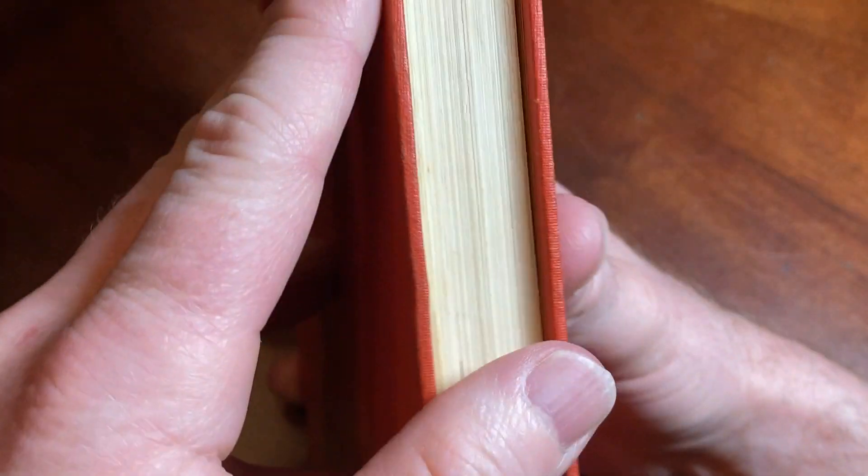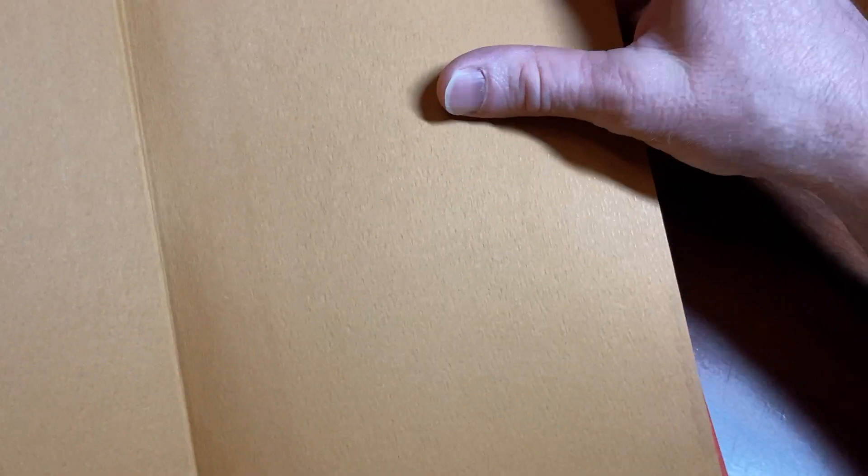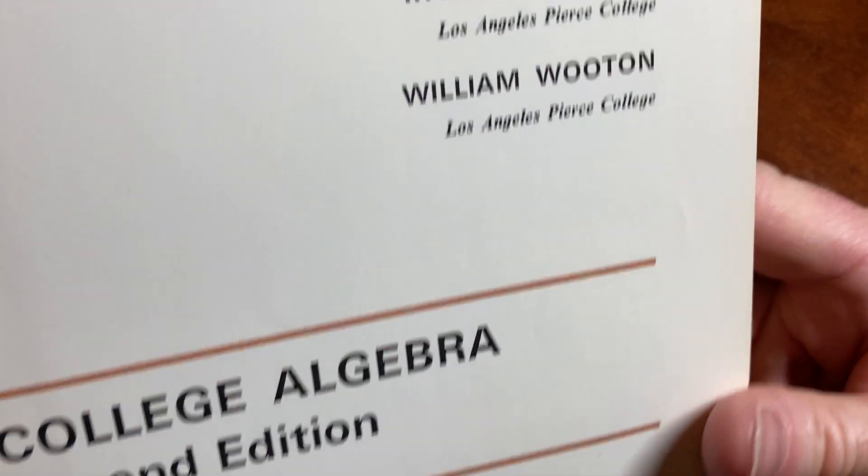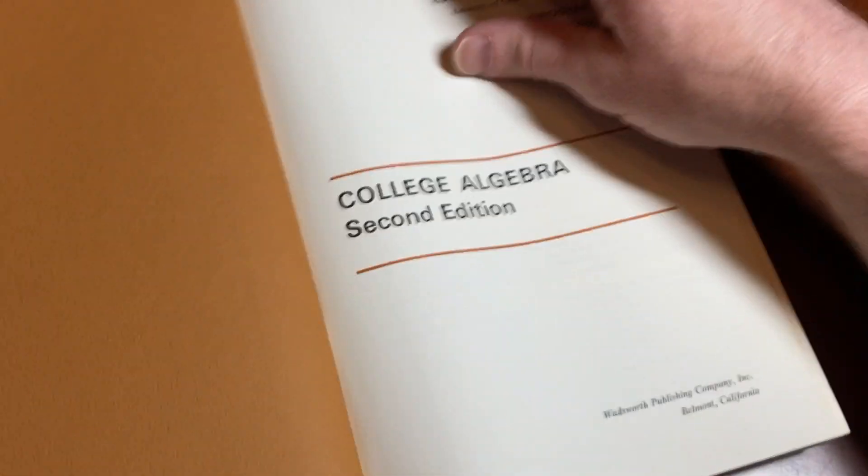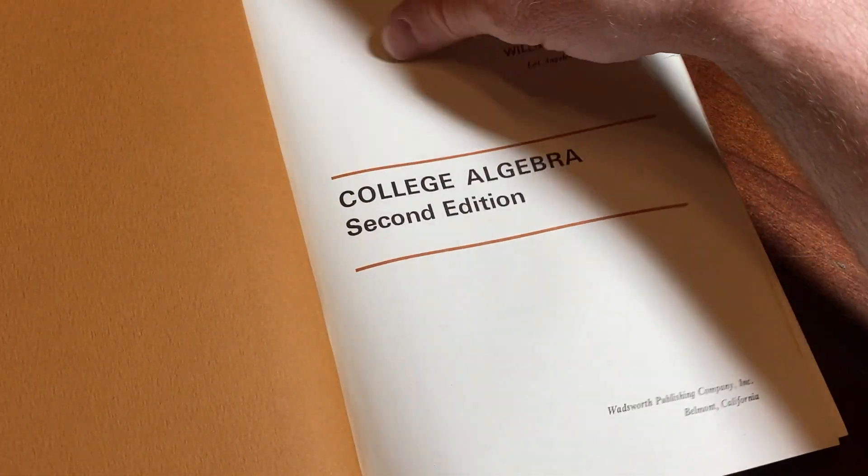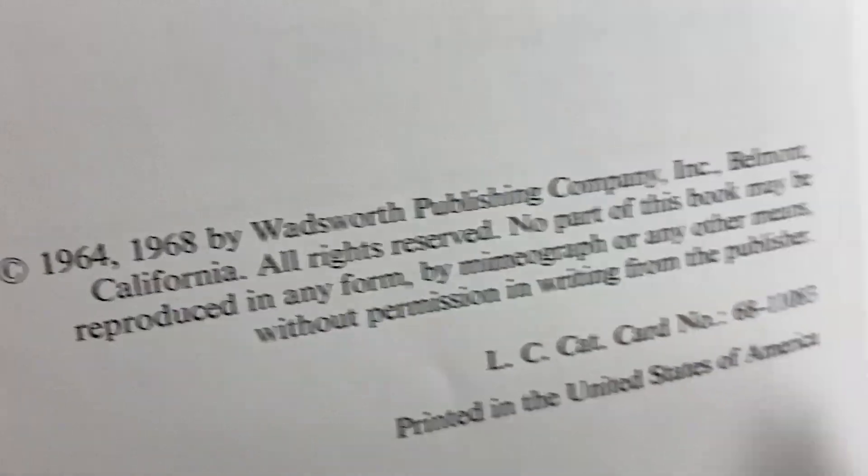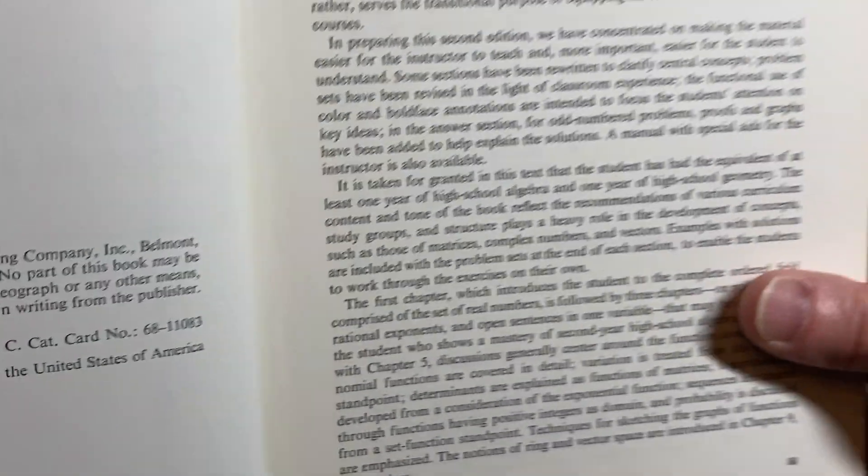I think you might be able to get this with the dust jacket. This one doesn't have a dust jacket. I'll leave a link in the description to any copies so you can pick a copy up if you want to. College Algebra, Second Edition, Wadsworth Publishing Company, Inc., Belmont, California. 1964-1968. Really, really old school.